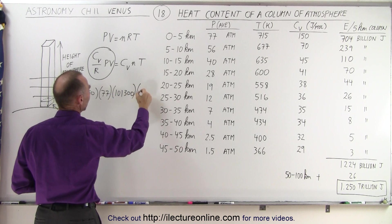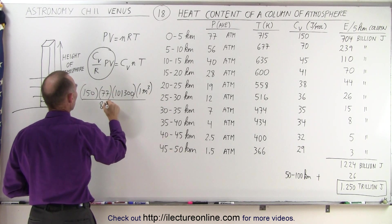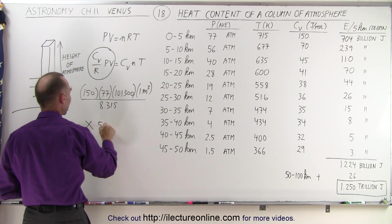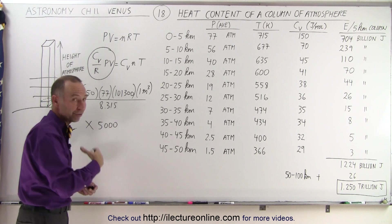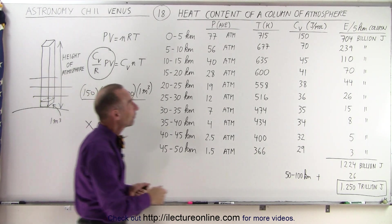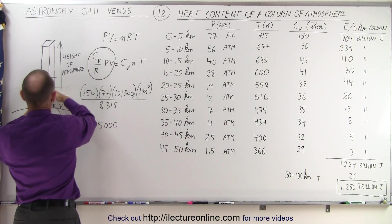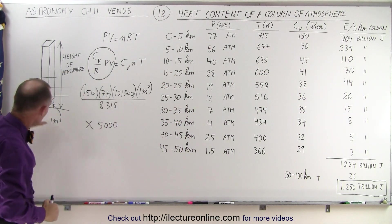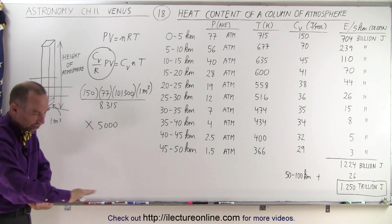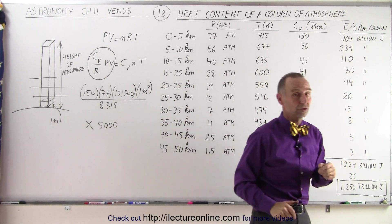We multiply that times the volume, which is one cubic meter, and divide that by the gas constant, 8.315. Then we take that result and multiply that times 5,000, because there's 5,000 meters in 5 kilometers. So the heat content in the atmosphere for the first 5 kilometers, for a column that has a cross-sectional area of 1 square meter, is 704 billion joules.